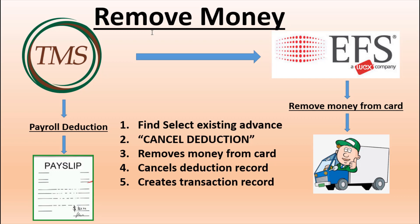To reverse the transaction, find the existing advance in the advance system and choose the Cancel Deduction button. This removes money from the card, cancels the deduction record, and creates a transaction record.